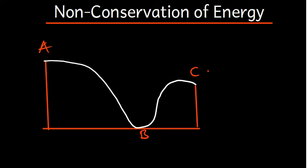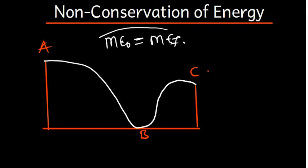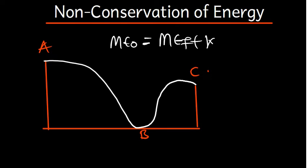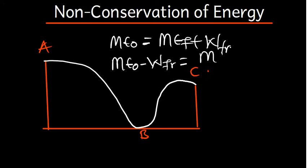The only difference between conservation of energy and non-conservation of energy is the formula. For conservation of energy, the mechanical energy initial equals the mechanical energy final. But if there is friction, we say the mechanical energy initial equals the mechanical energy final plus the work done due to friction. Alternatively, some books write it as mechanical energy initial minus the work done by the friction force equals the mechanical energy final — which is just the same.